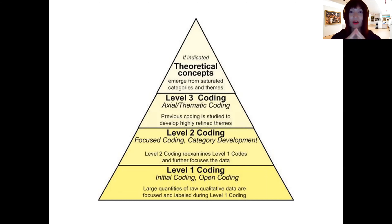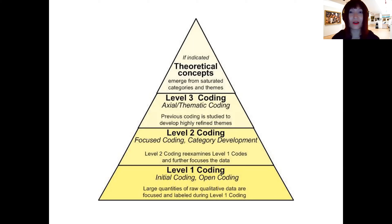At level one coding your codes are usually quite descriptive — you may use the word which has been mentioned by your interviewees as a code. As you get to higher levels, your coding becomes more and more abstract and theoretical, or what some people call analytical. We will explain how to do the basic level coding and how to do the more advanced level of coding.